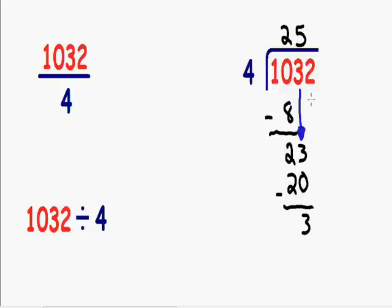And once again, we need to bring down the next number. So we need to bring down our 2. And after we place our number 2, we need to figure out how many times does 4 go into the number 32.